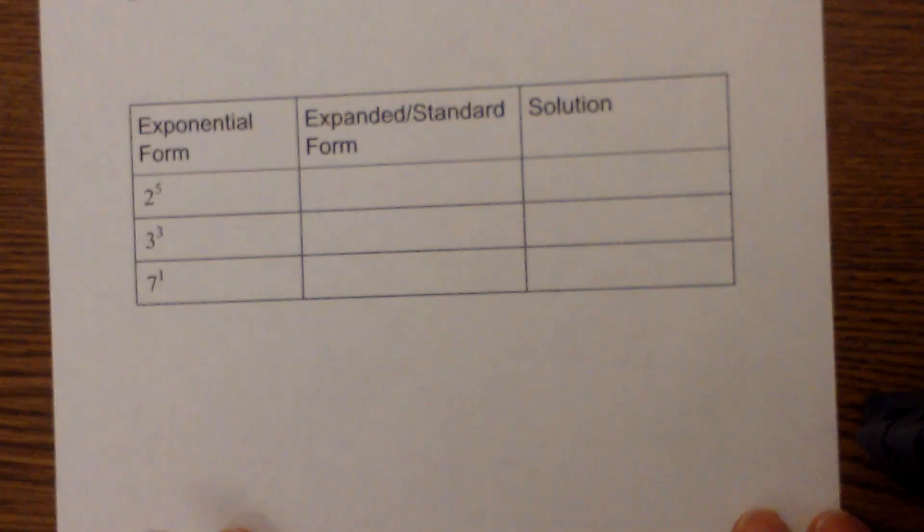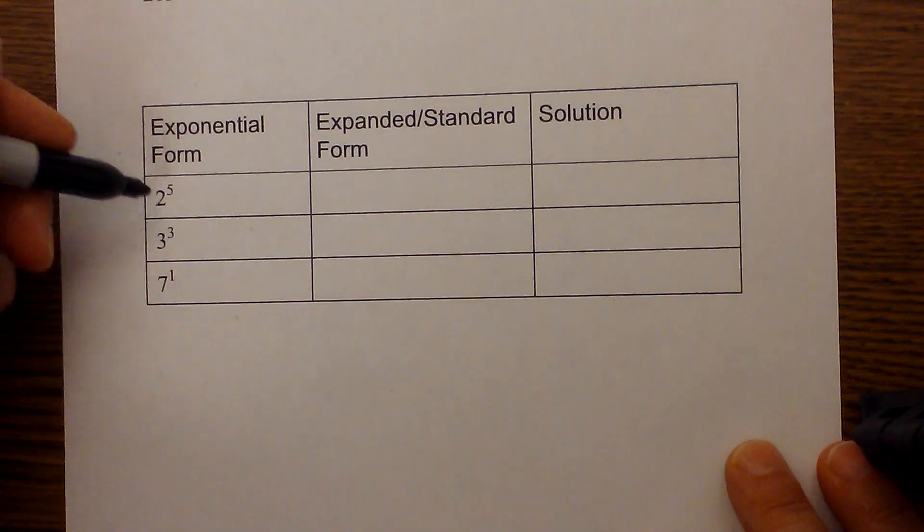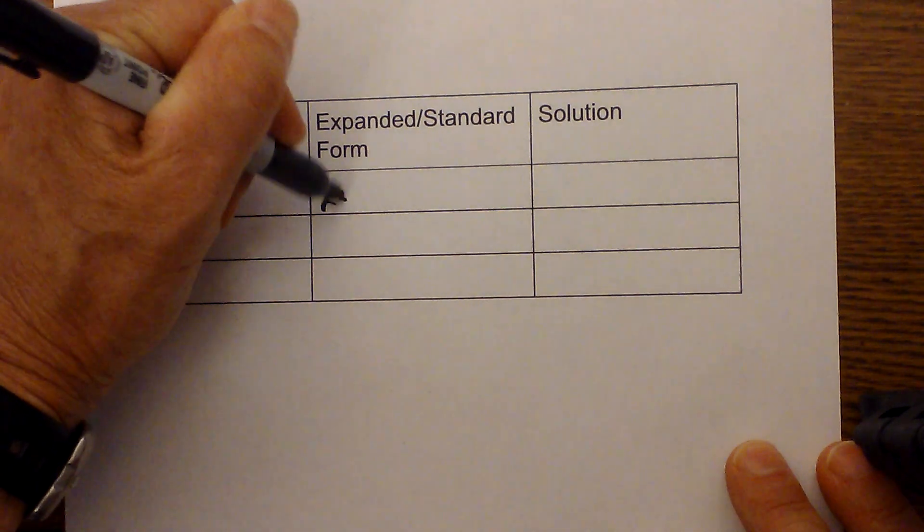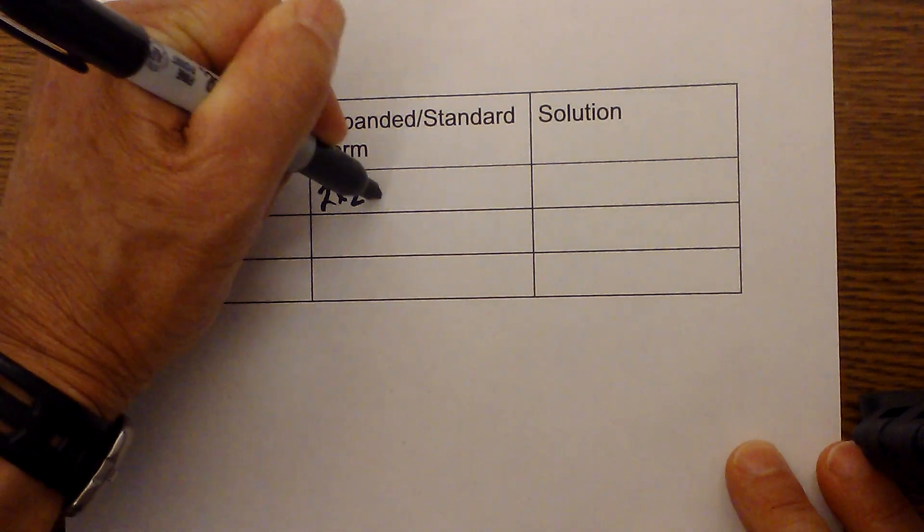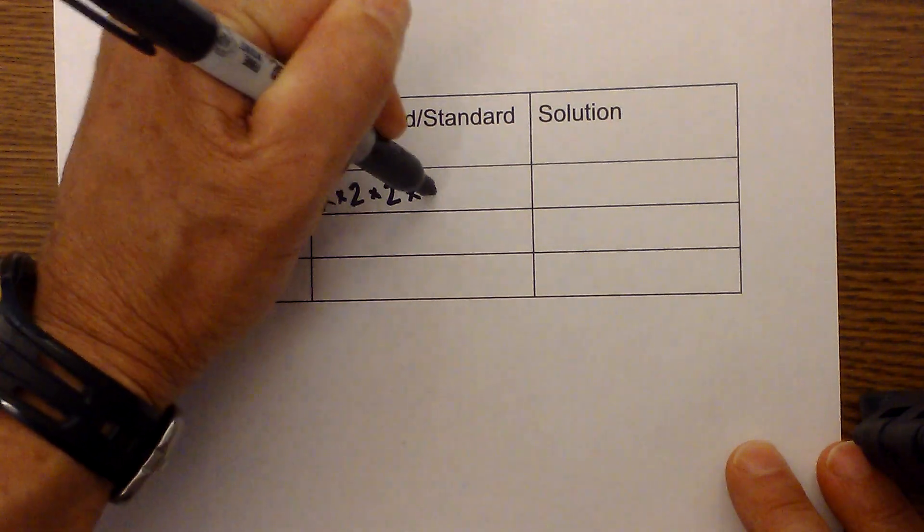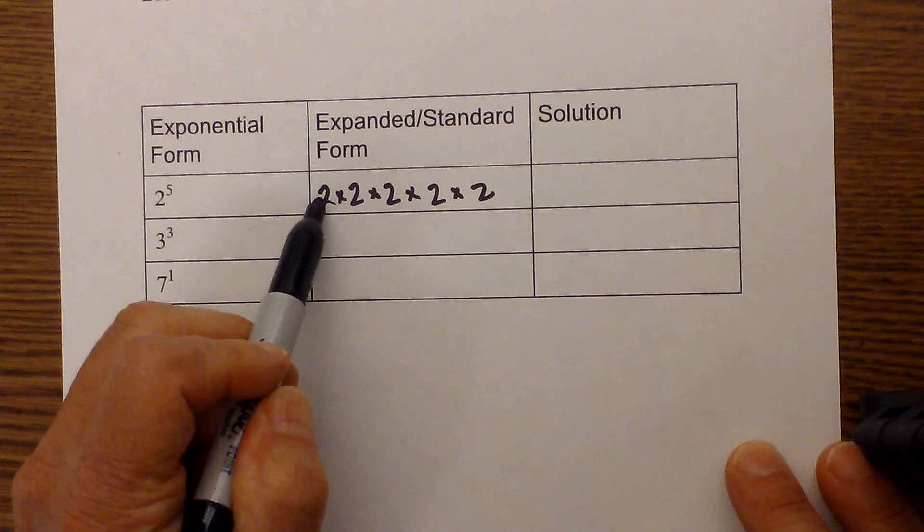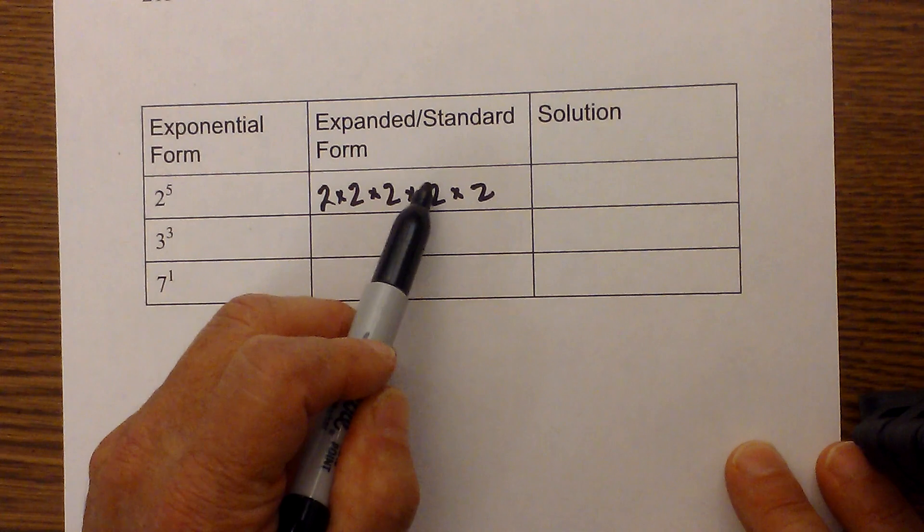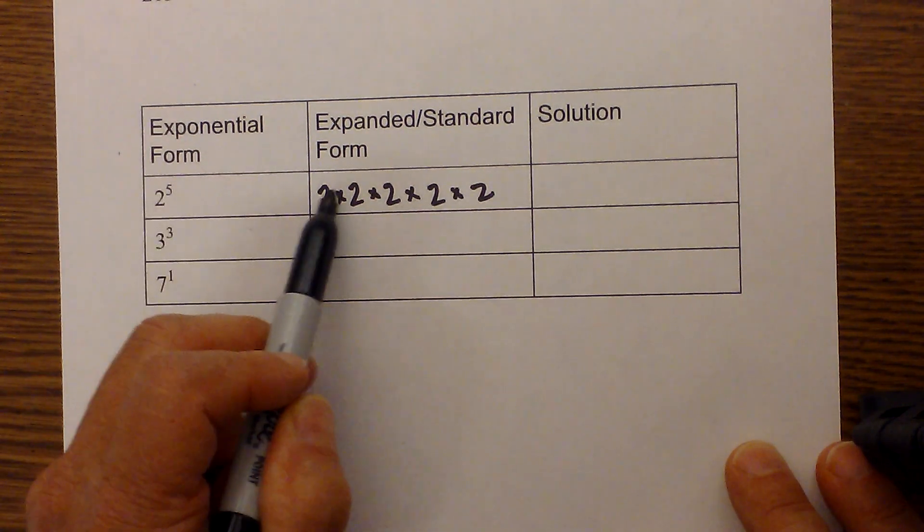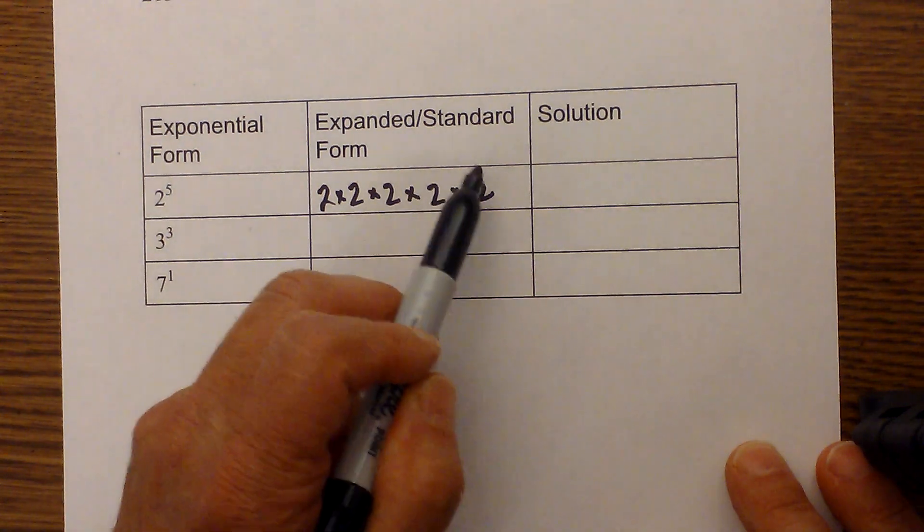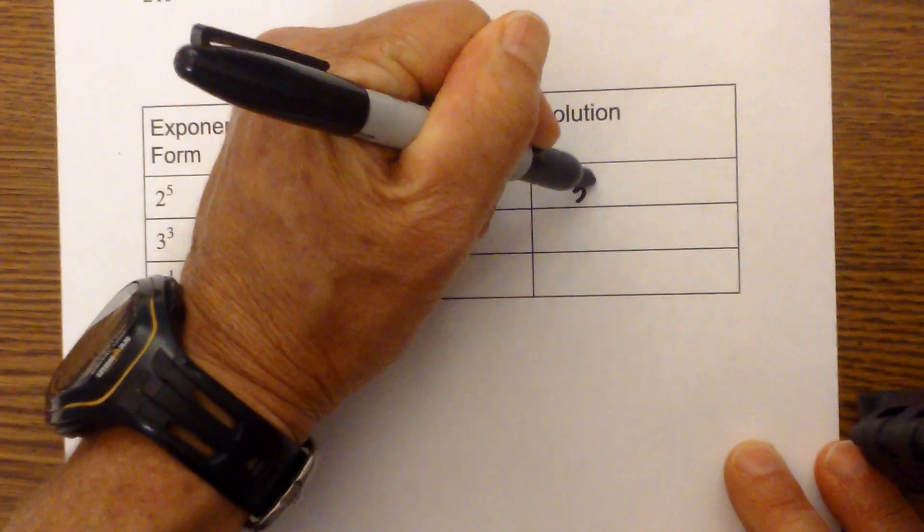Let's look at a couple examples. We have 2 to the 5th. If you look at that in expanded form, it would be 2 times 2 which is 4, times 2 which is 8, times 2 which is 16, times 2. So let's count the 2s: 1, 2, 3, 4, 5. And so that equals 2 times 2 is 4, times 2 is 8, times 2 is 16, times 2 is 32.